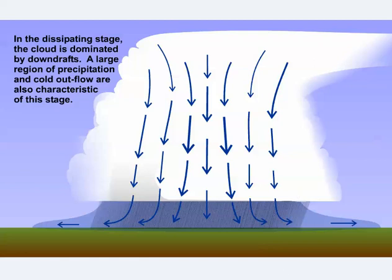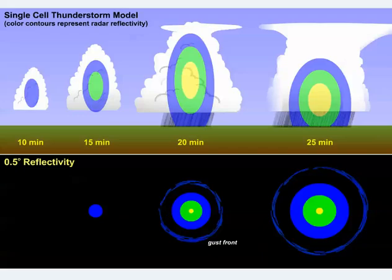The birth, life, and death of a single-cell thunderstorm typically takes less than 45 minutes.